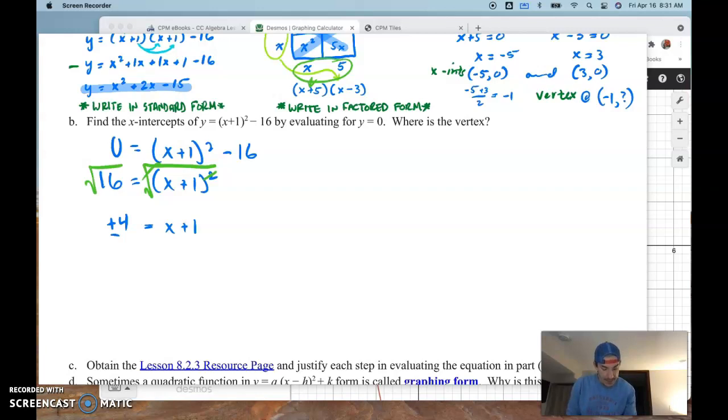And then I have to set this equal to both pieces, right? I have to consider the case where 4 is equal to X plus 1. I also have to consider where negative 4 is equal to X plus 1. And then I subtract 1 from both sides. And I get X equals 3 right here. And I get X equals negative 5 right there.